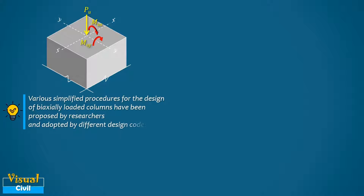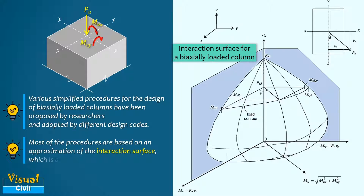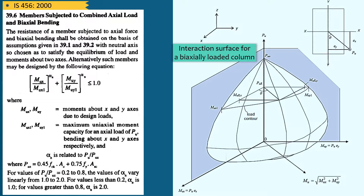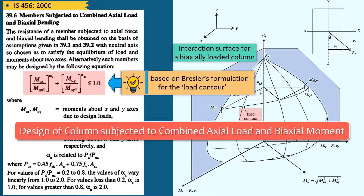Most of these simplified procedures are based on an approximation of the interaction surface, which may be visualized in a three-dimensional plot of Pu, Mux, and Muy. The simplified method adopted by the IS code in Clause 39.6 is based on Bresler's formulation for the load contour. Let us understand the complete design procedure for a column subjected to combined axial load and biaxial moment with the help of a numerical example.